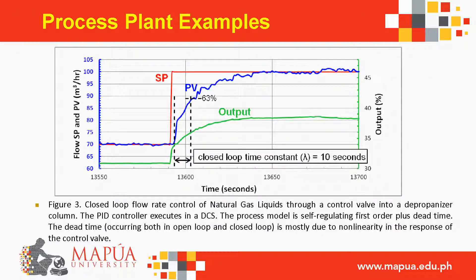Process plant example: closed-loop flow rate control of natural gas liquids through a control valve into a depropanizer column. The PID controller executes in a DCS. The process model is self-regulating first-order plus dead time; the dead time in both open and closed loop is mostly due to nonlinearity in the control valve response.